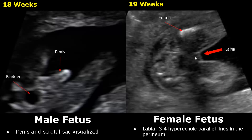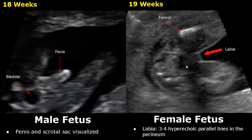Over here we have an image of 19 weeks. In a female fetus, the labia will appear as three to four hyperechoic parallel lines in the perineum. These hyperechoic lines are helpful in determining the gender — the gender will be female. It is partially obscured by the shadowing due to the femur, but we can still see the labia.